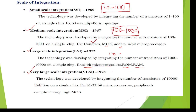Coming to VLSI — very large scale integrated circuit — if 10,000 to 1 million transistors are integrated on a single chip, then it is named as very large scale integrated circuit technology.